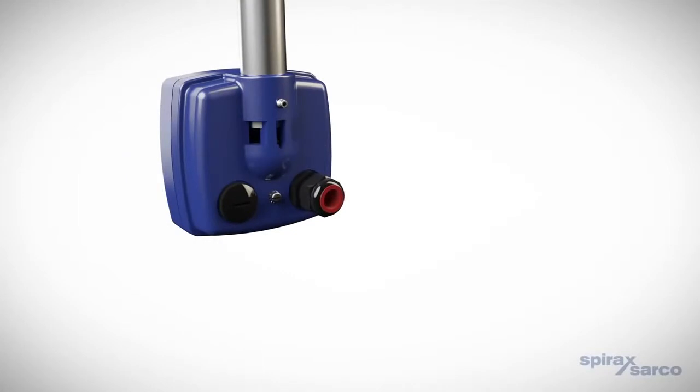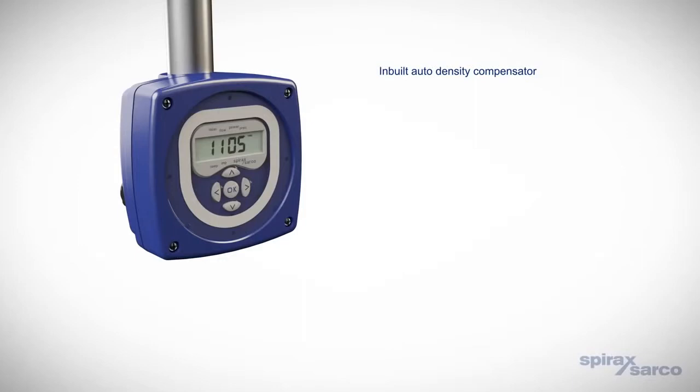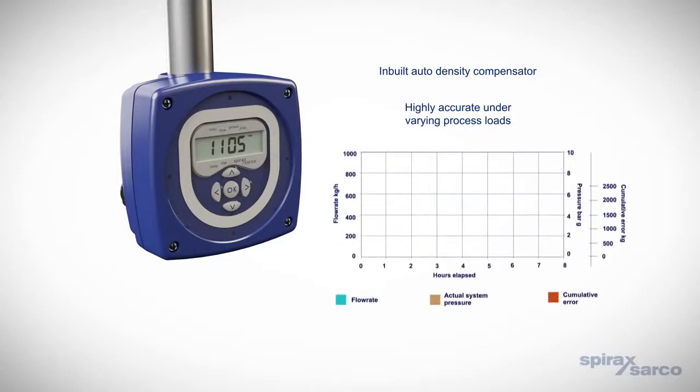Designed for steam, the TFA flow meter incorporates an inbuilt automatic density compensator, which eliminates inaccuracies caused by changes in steam density. This is necessary as the pressure in steam systems almost always fluctuates. Unless this is taken into account, the accuracy of the measured flow results will be affected.